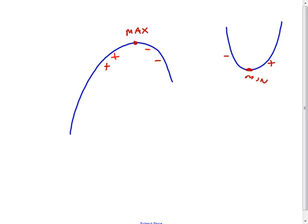What I want to talk about today is how this function is considered concave down. There are a couple ways you can picture something being concave down. One way is it's kind of the upside-down U shape, or like an N. Another way is: would it hold water? If I poured water in from a spigot right here, would it run off or would it puddle up? It would definitely run off the sides here.